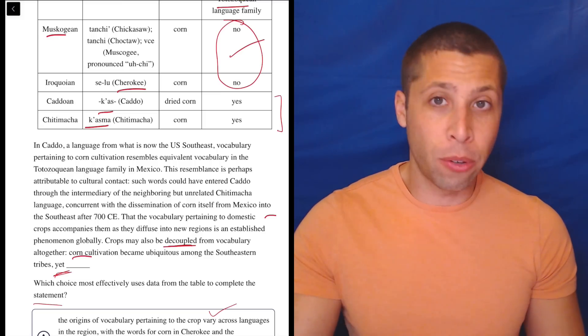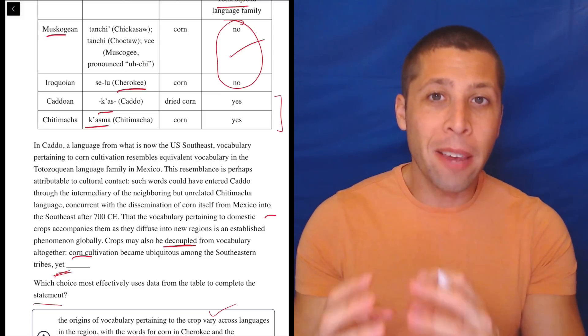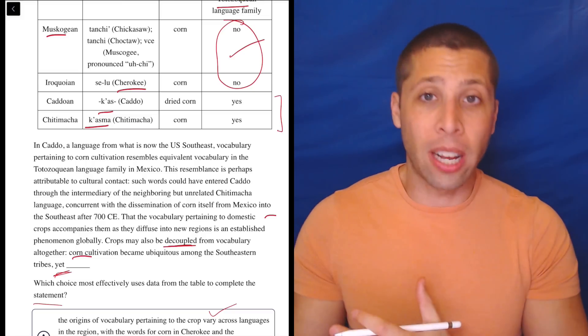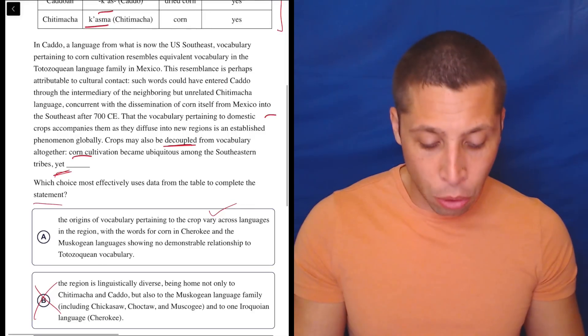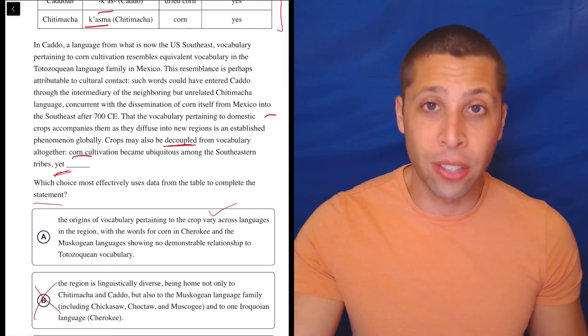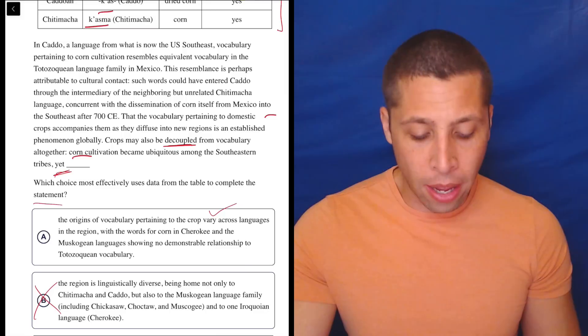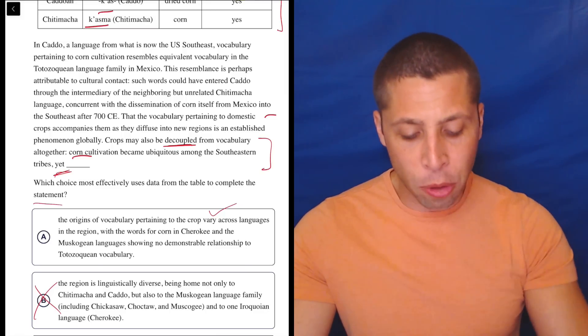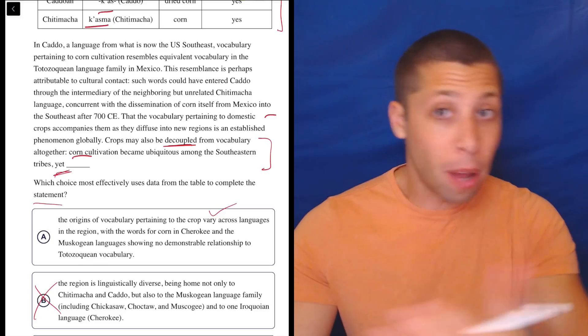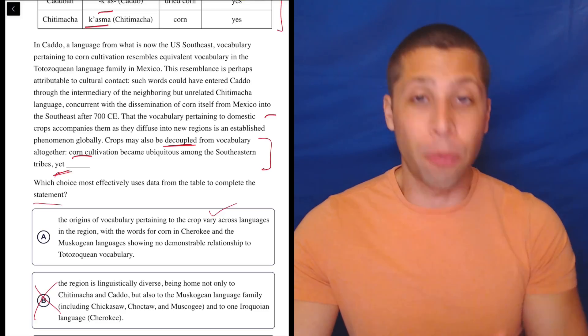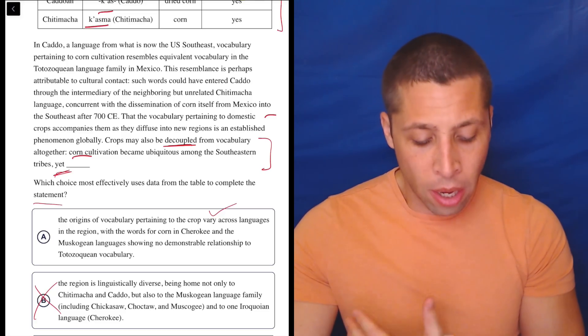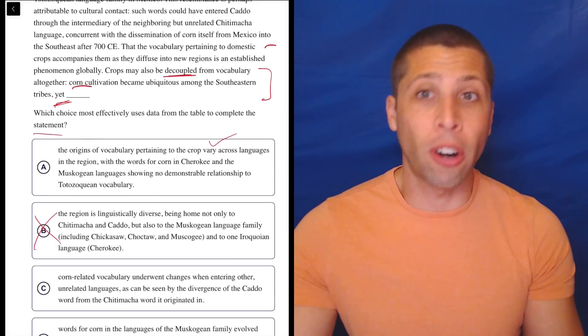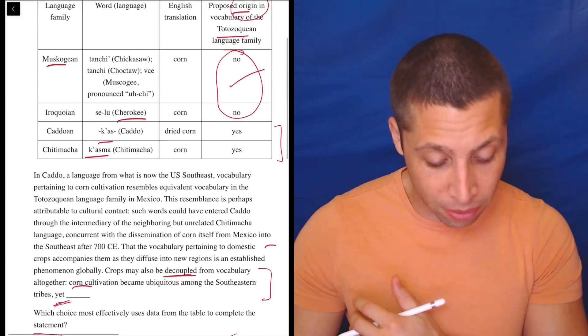Plus, notice that both of those are talking about the same thing, these languages where the word for corn, we know where it comes from. It comes from the same people who made corn come into the southeast United States from Mexico. So the whole point of this last sentence is that we want the name of the crop to be decoupled from the word for it in the origin language altogether.